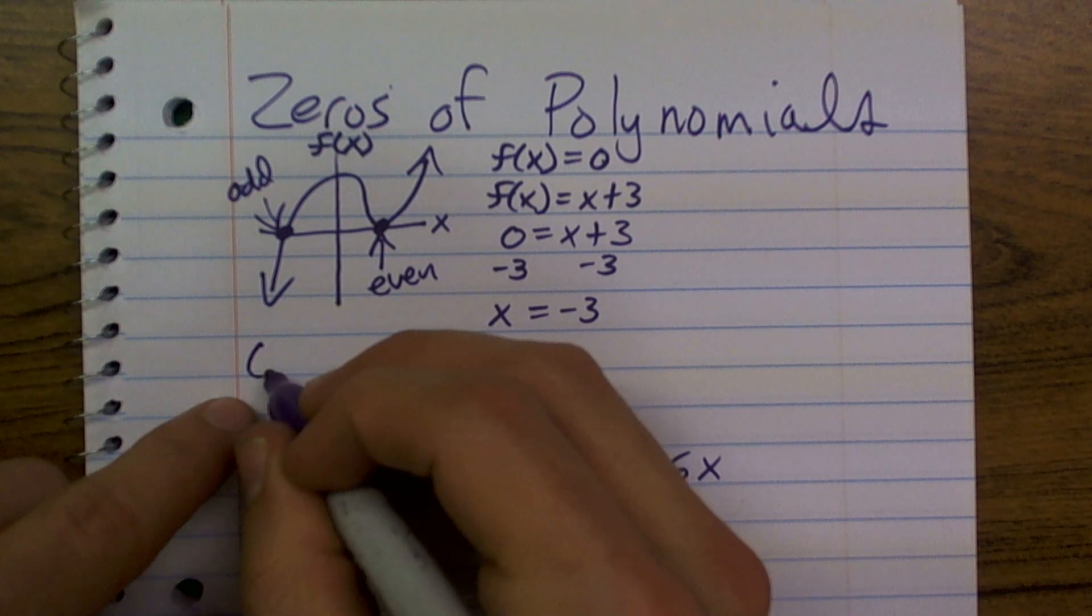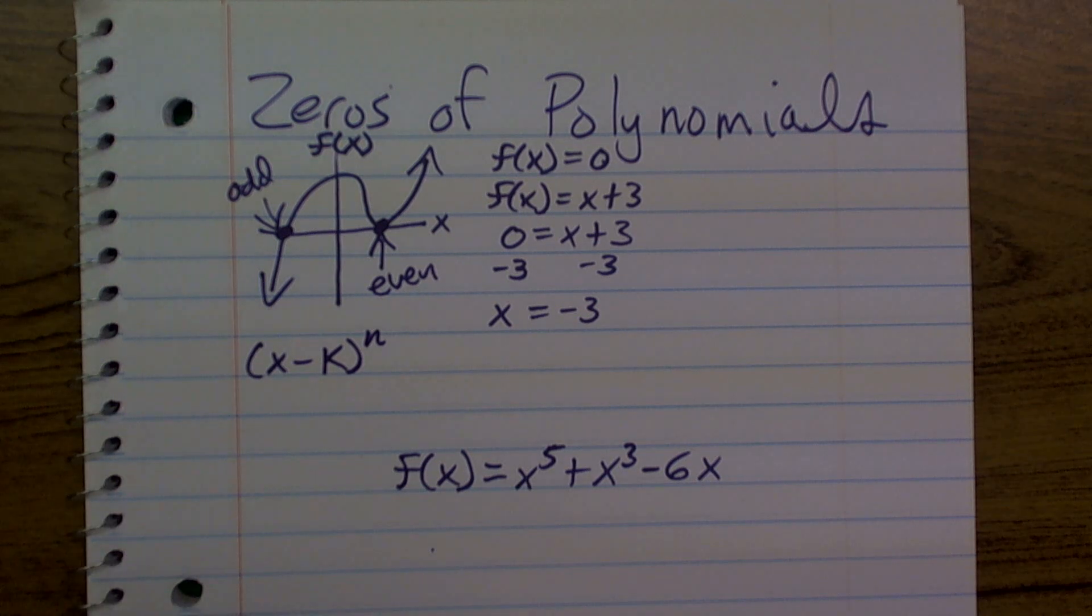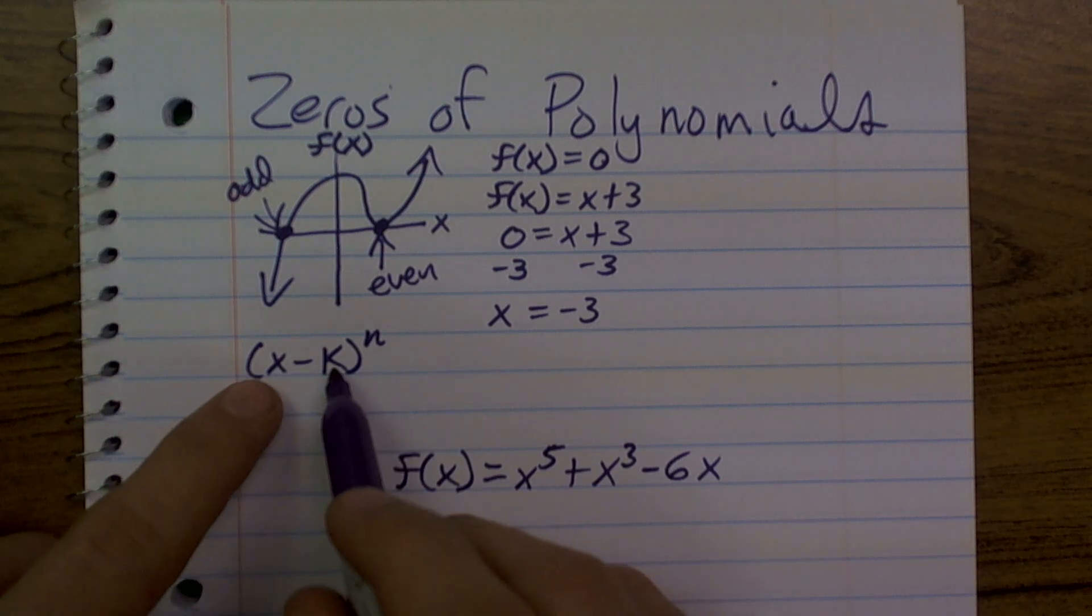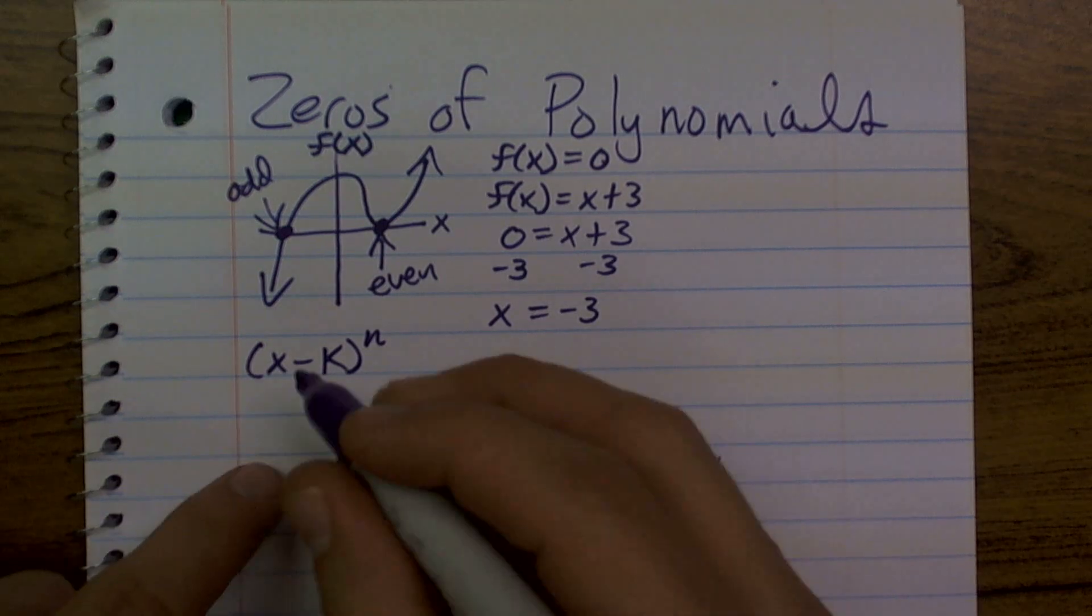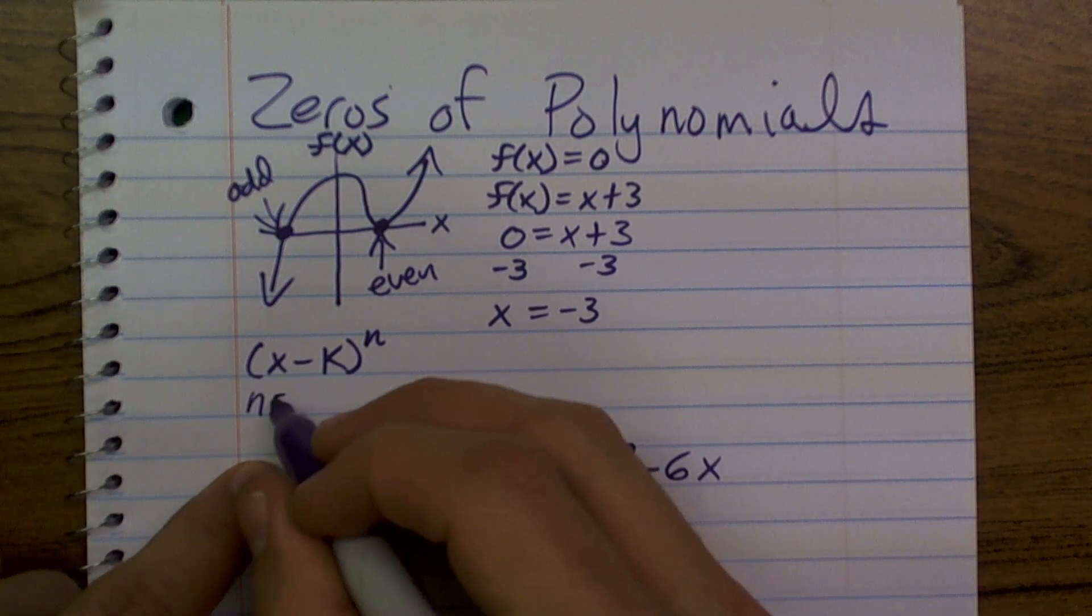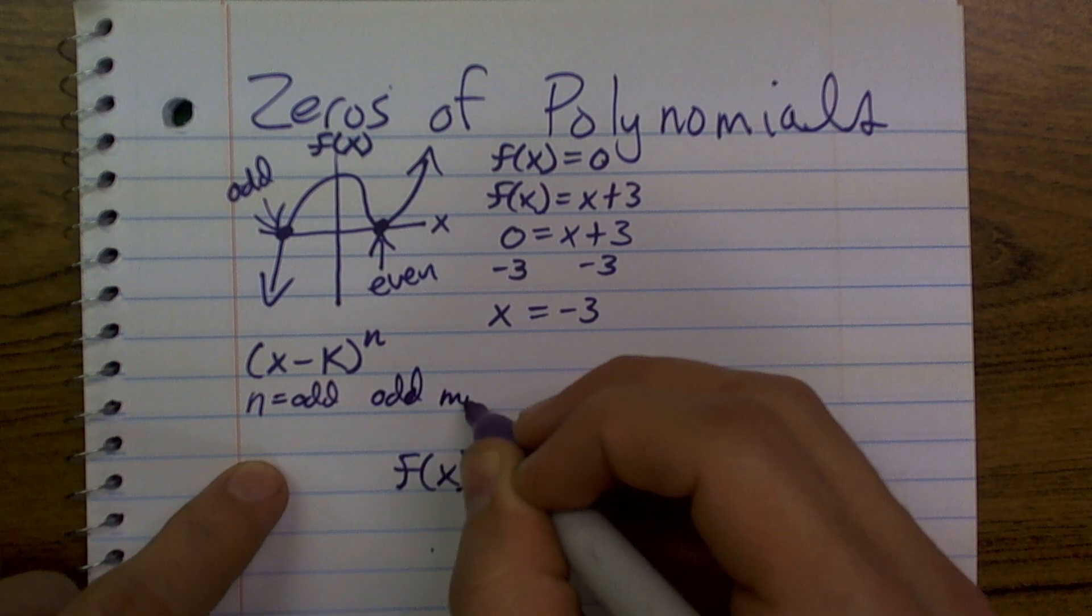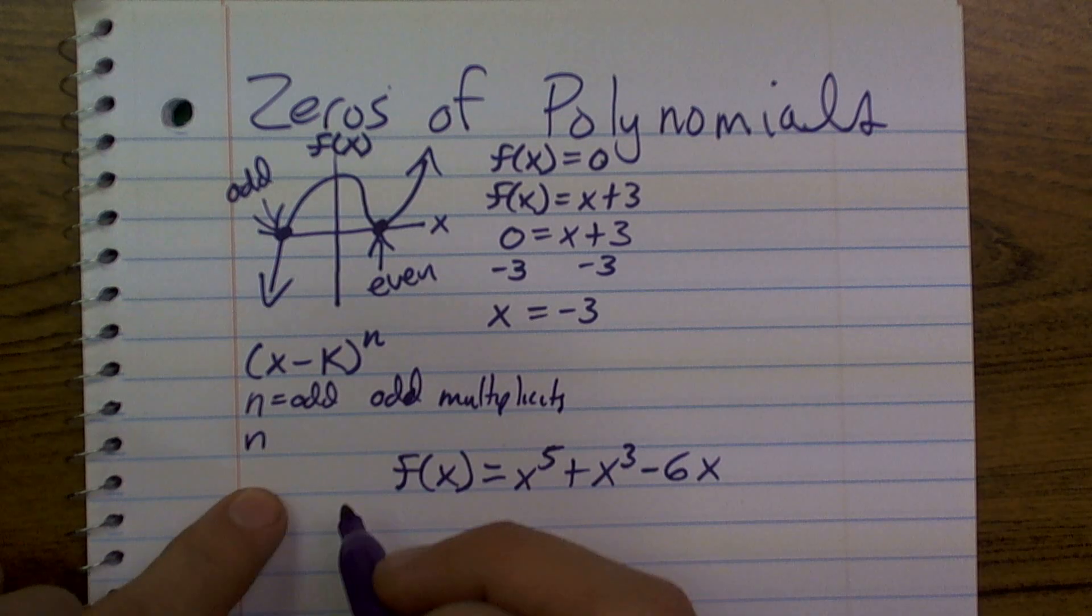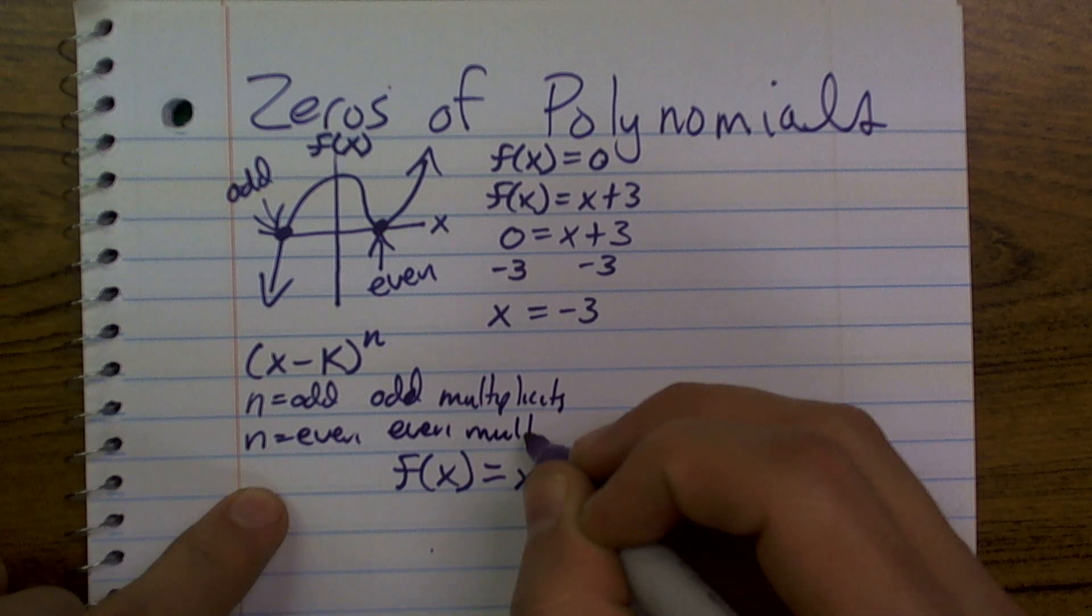Now, a way that we're going to be determining this is by the formula for our factors, where x minus k raised to the n power. Now, whenever we have a factor, x minus k, and that factor is raised to an odd power, we're going to have odd multiplicity. So, when n is odd, we have odd multiplicity. And you can kind of say the same thing when n is going to be even, you're going to have even multiplicity.